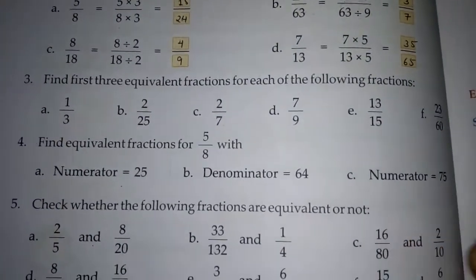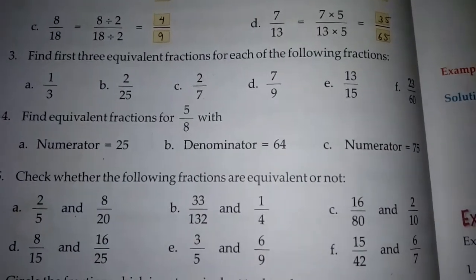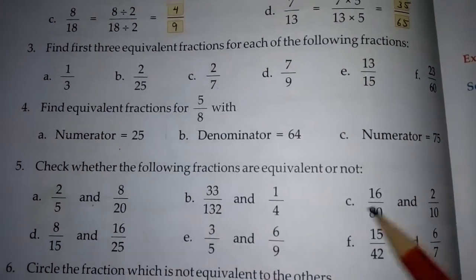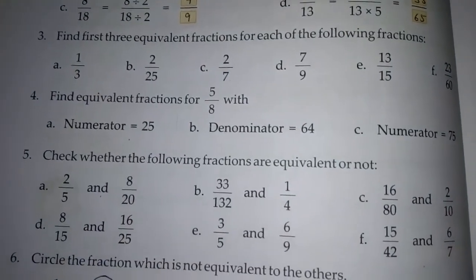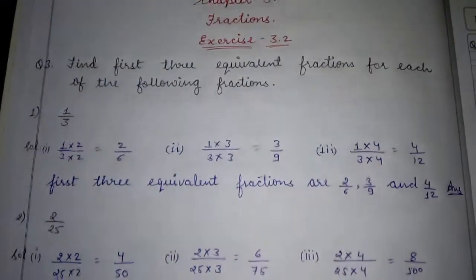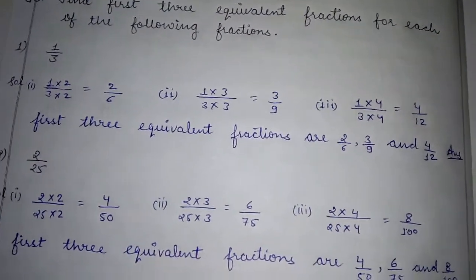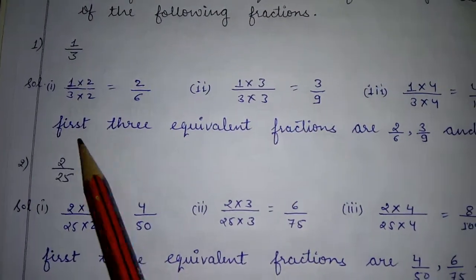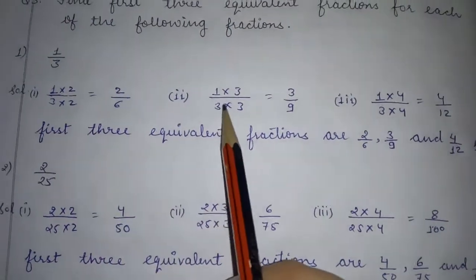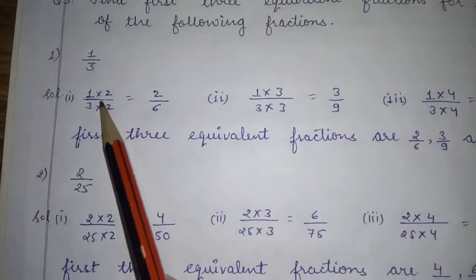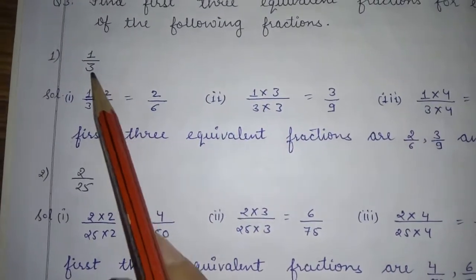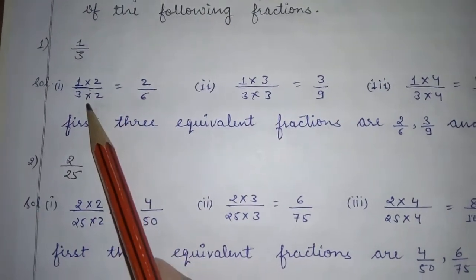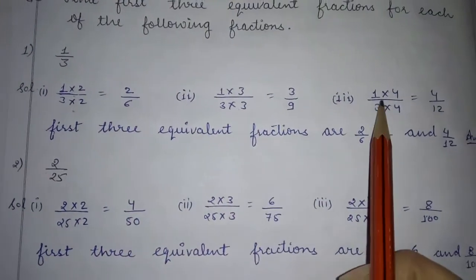Question number 3: find the first three equivalent fractions for each of the following. Ab aapko in fractions ke teen equivalent fractions find out karne hain. Equivalent fractions kaise nikalte hain — simply jo hamari counting hoti hai usse hum multiply karte jaate hain. 1 se multiply karenge to same number milega, phir 2 se, phir 3 se, phir 4 se.